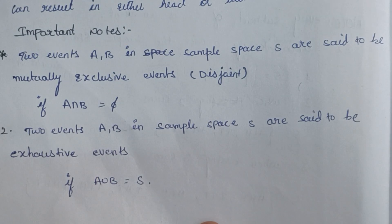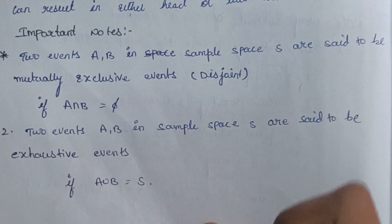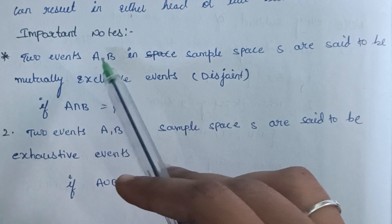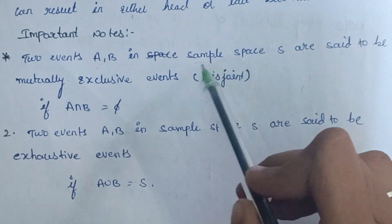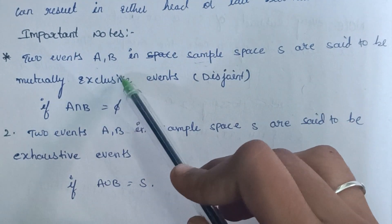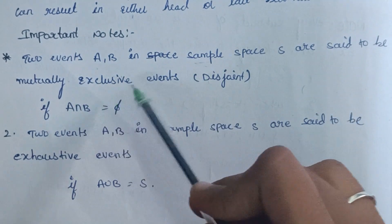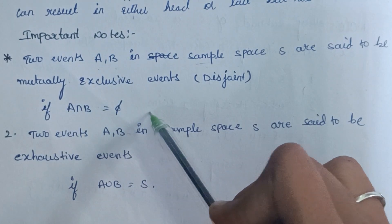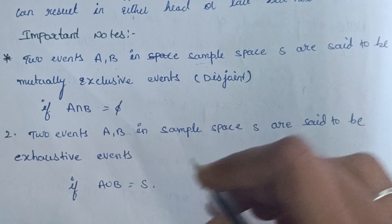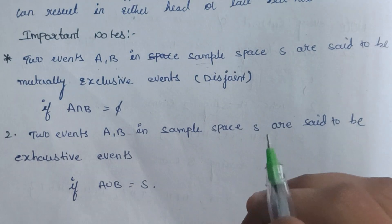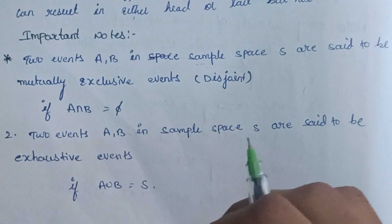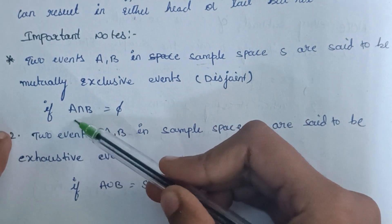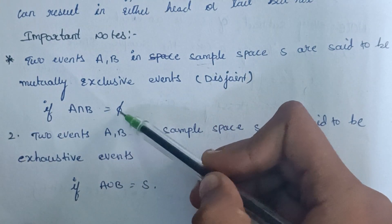We have two events: A is an event and B is an event. We will check out the sample space. Mutually exclusive events — they cannot occur both at the same time. If A intersection B is equal to null (empty set), then A and B are called mutually exclusive events.